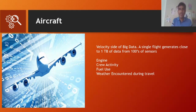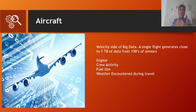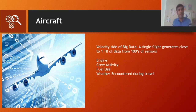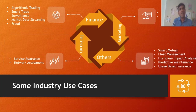Aircraft are another example. A single flight from source A to destination B generates close to one terabyte of data from hundreds of sensors covering engine activity, crew activity, fuel use, and weather conditions encountered during travel. Some of this data is transmitted back to the command center, while much is retained within the flight. This data can be used to advise the pilot or even navigate the flight autonomously during adverse conditions — making real-time analytics highly prominent in aviation.